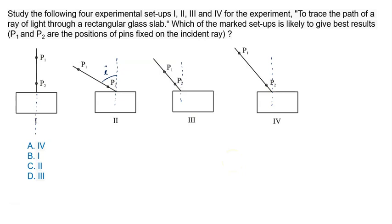But in option number 3, the pins are quite close to each other. So it will be hard for all of us to align the line passing through both of them when seen from the other side of the slab.